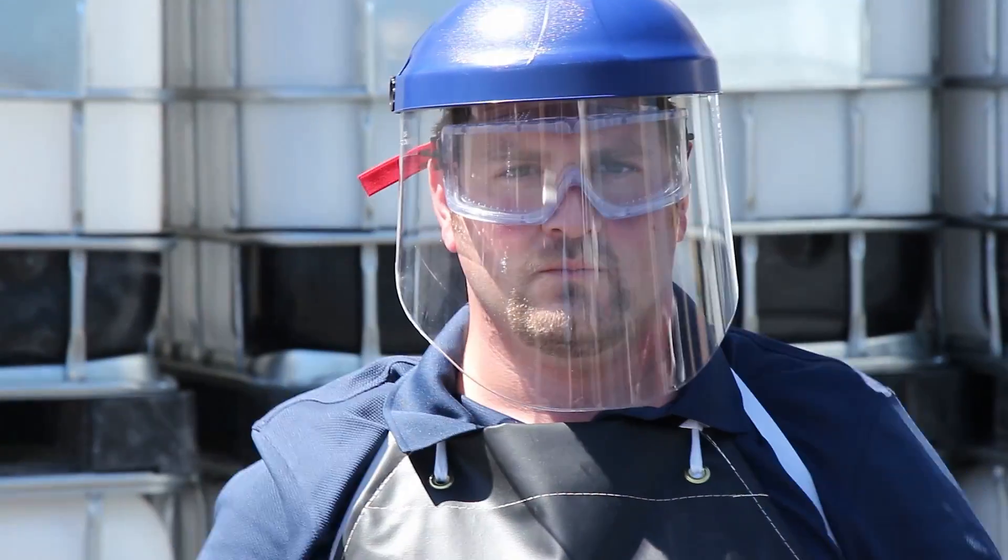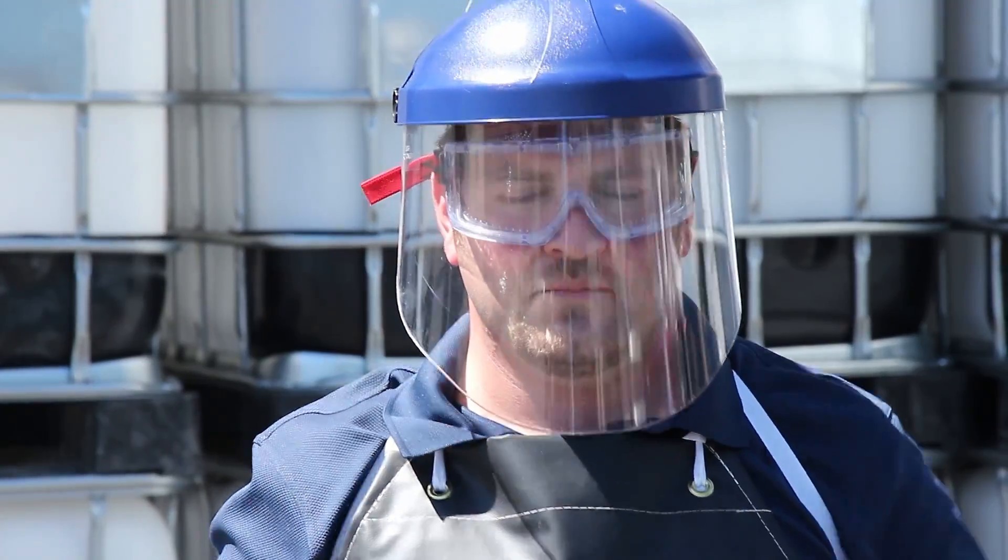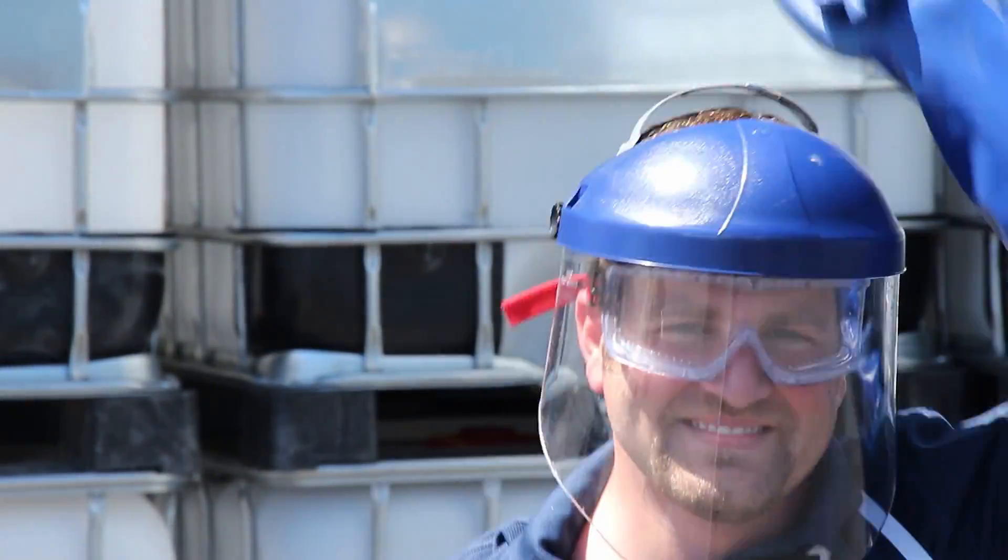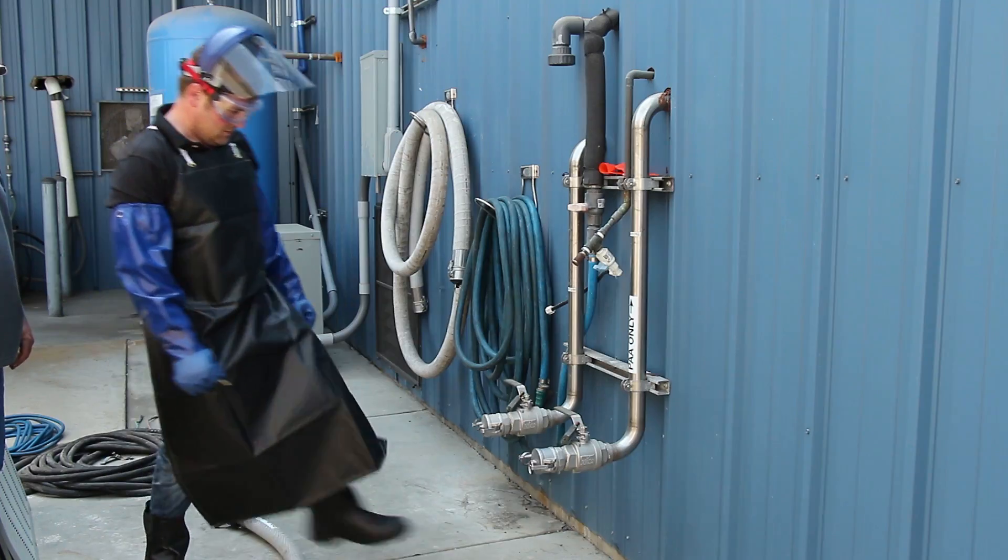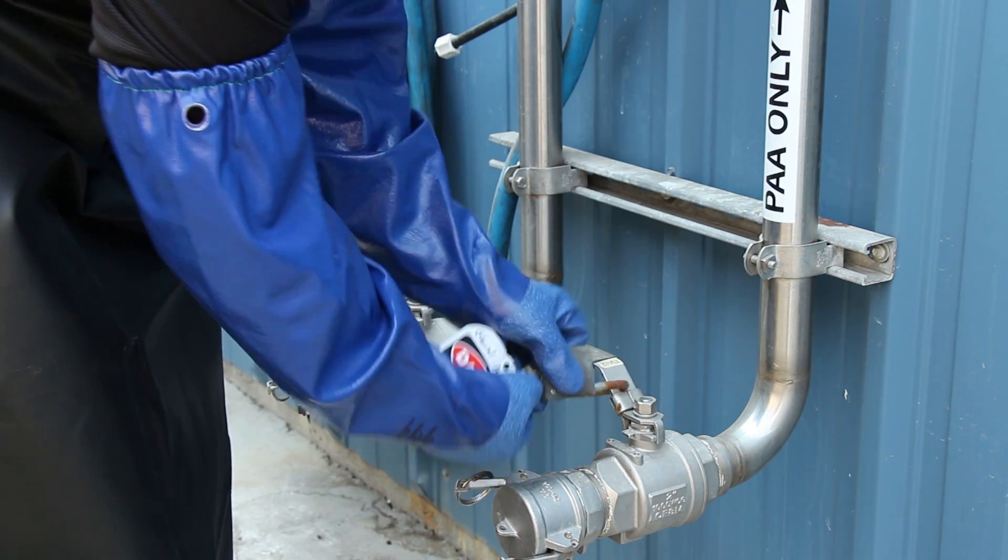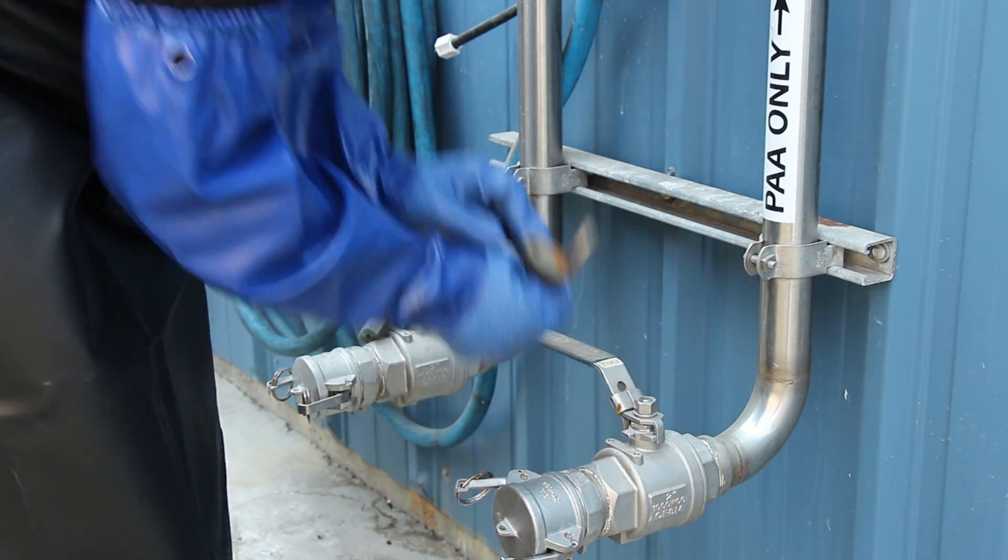The transfer of totes from a dedicated bulk container should only be performed by approved personnel. Once properly dressed, the steps are as follows. First, verify that the line being used is dedicated for peracetic acid. Next, remove the lockout mechanism.